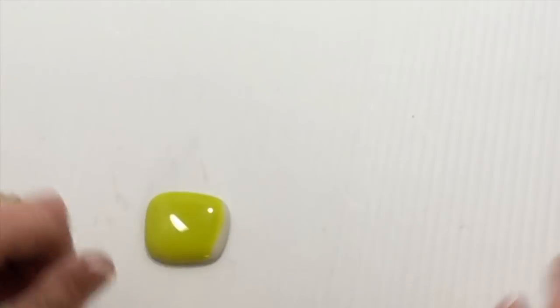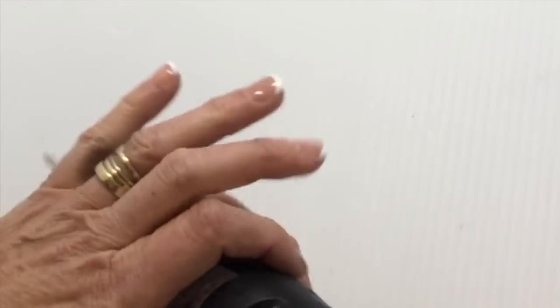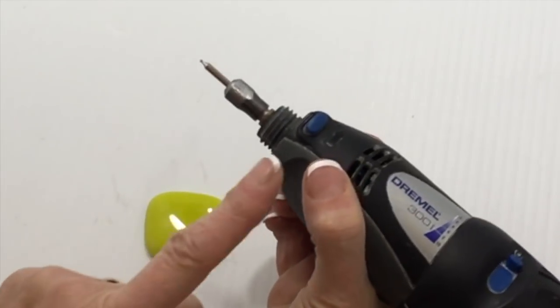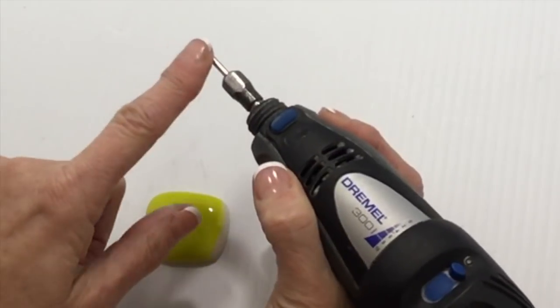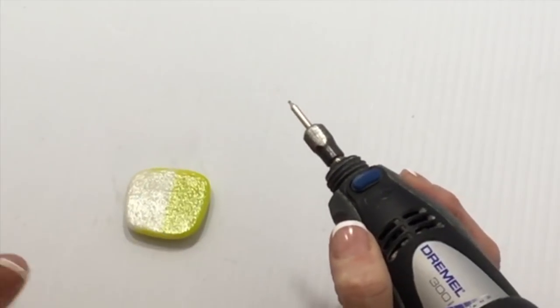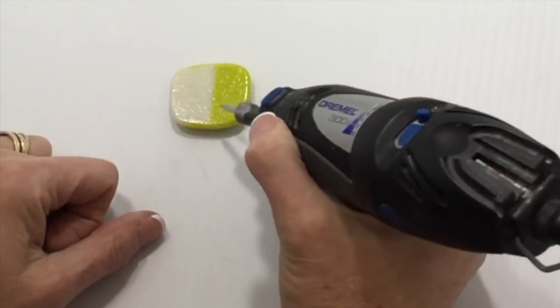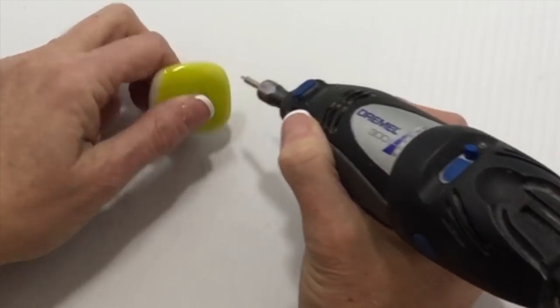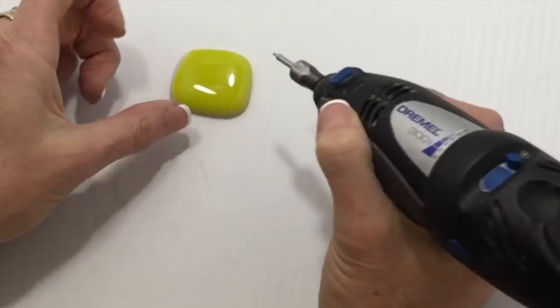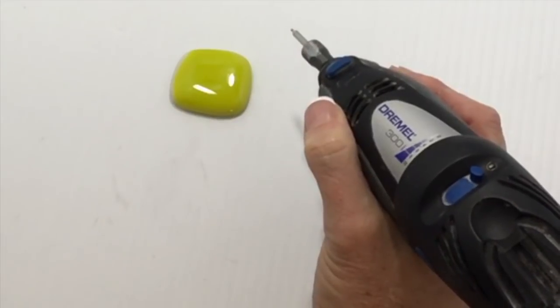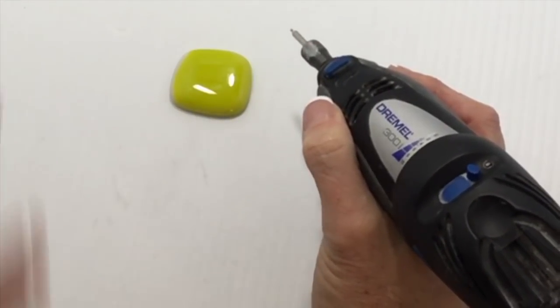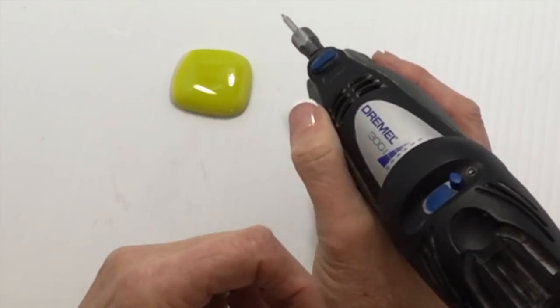All right. Another option is to use a Dremel-type tool and etch your signature. Now, this can be done at any time. It can be done on the back of your work, on the edge of your work, on the front of your work, after it's full fused, after it's slumped. So it can be done at the end.